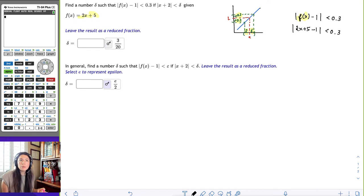Then I would go ahead and work with that and have |2x + 4| because 5 minus 1 is 4 less than 0.3. I see a common factor between 2 and 4. So I'm going to factor that out and get |2(x + 2)| less than 0.3.